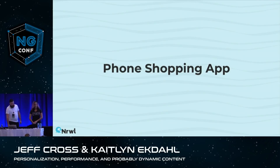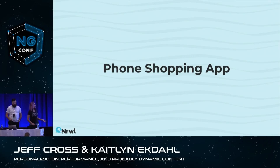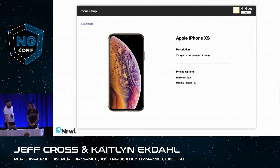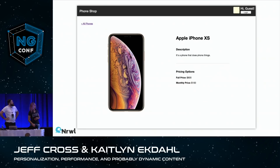Today we have a very simple shopping application — something you would see on T-Mobile.com — where we have a simple phone browse page where you can see some phones. When you click on one, you can see some details about that phone. Two things to keep in mind: in the upper right corner we can see a personalized message, and below the description we have some financing options.